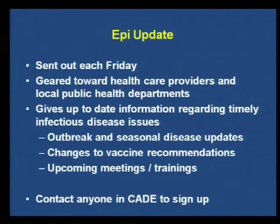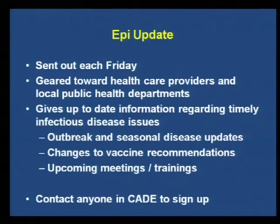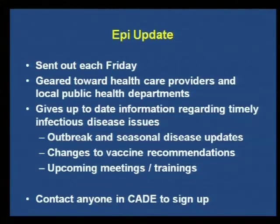The epi update gets sent out each Friday. We have over 2,000 to 4,000 people subscribed, and some organizations pass it around as well. We gear it towards clinicians — the goal is to give updates on what's going on with infectious disease in Iowa, including outbreak and seasonal disease updates, changes to vaccine or other recommendations, and upcoming meetings and trainings. It's a good resource if you want to know what's happening around the state on a week-to-week basis. You can contact anyone in CAID to sign up.